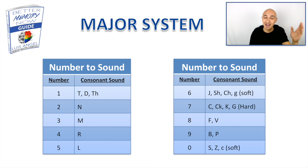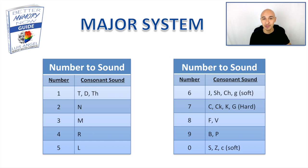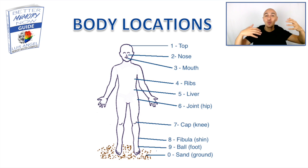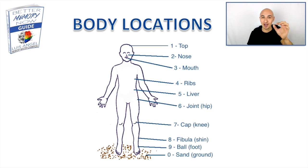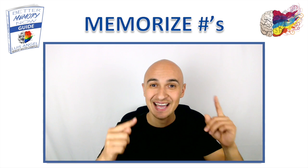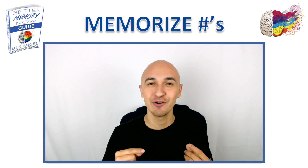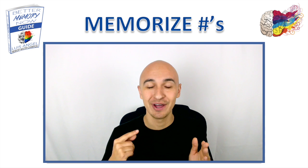Essentially, a one is a T or D sound, eight is an F sound, a five is an L sound, and so on. As you see on the screen, one is top, two is nose, three is mouth. We use body locations to help memorize the consonant sounds for each number. Let's jump right into using that system to create images and associations for every single number between zero and nine.